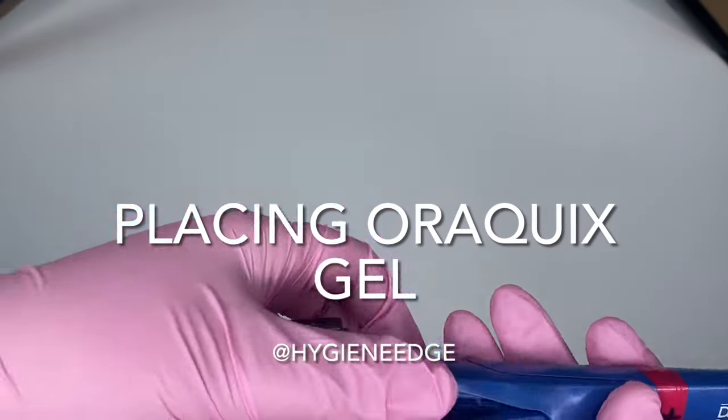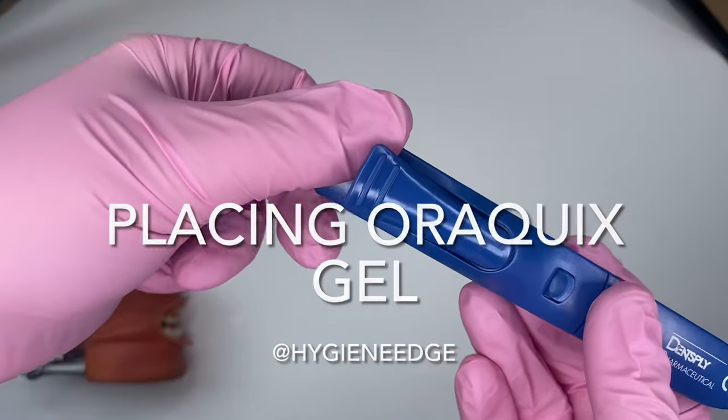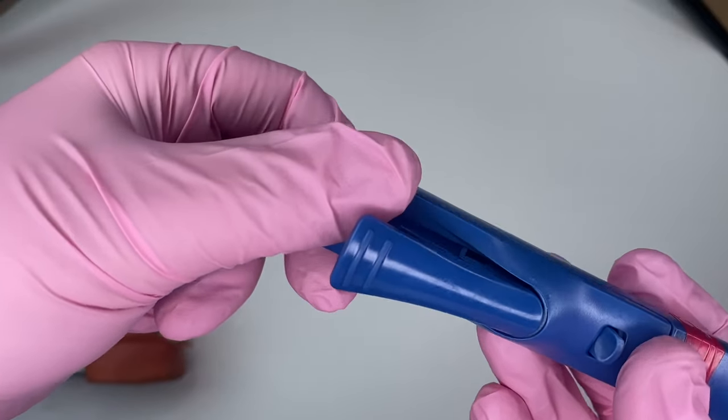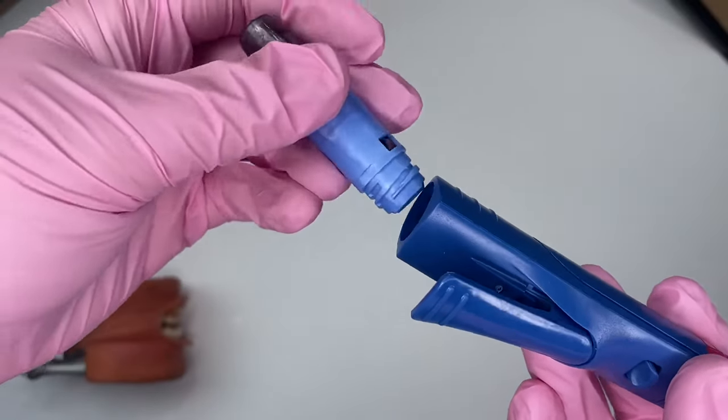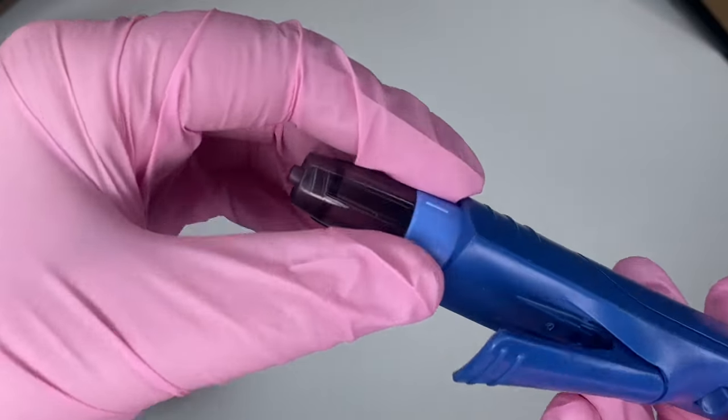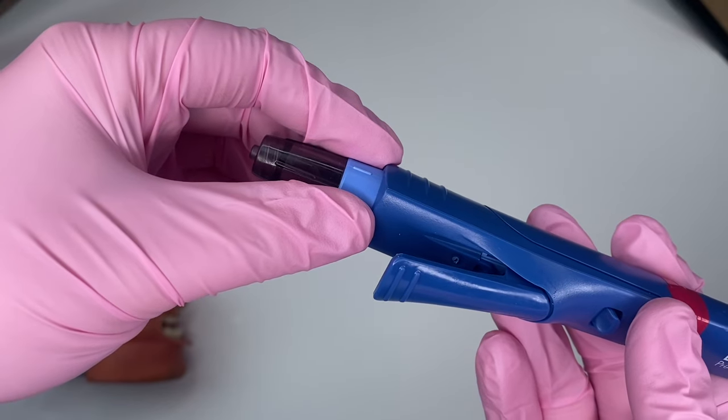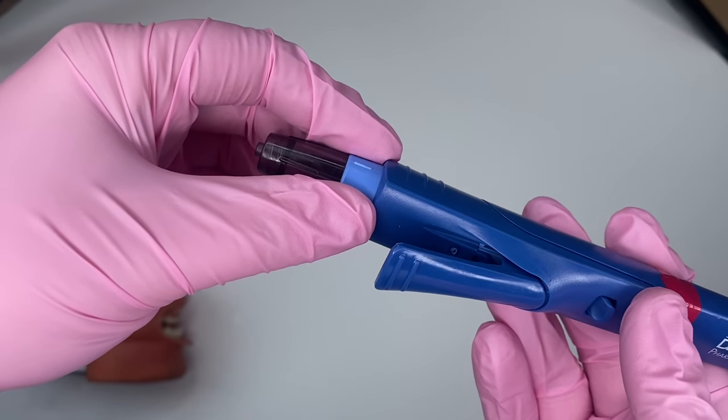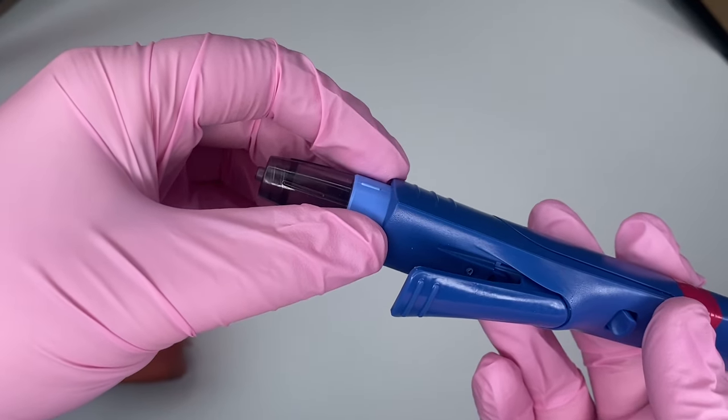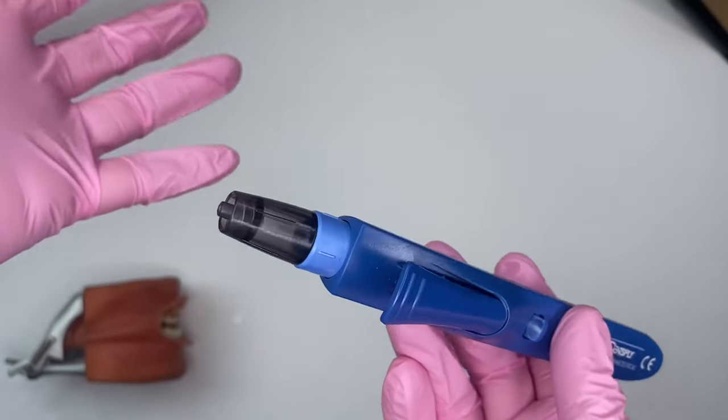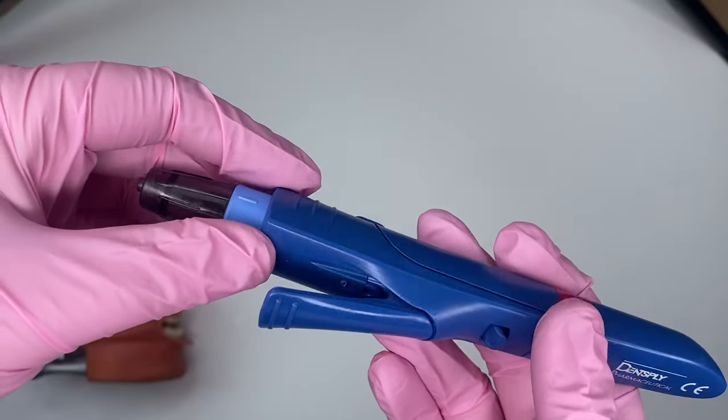Let's talk about OroKix and how you can use it in your practice. OroKix is a topical anesthetic with lidocaine and prilocaine that you can put subgingivally for periodontal therapy patients. It's really nice if you have a localized area or if your state doesn't allow you to place local anesthetic. It's a great option.